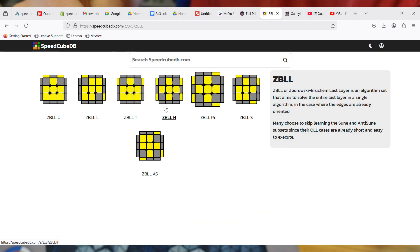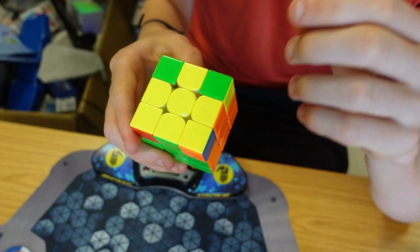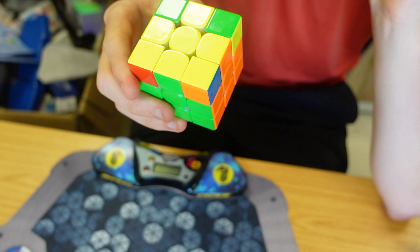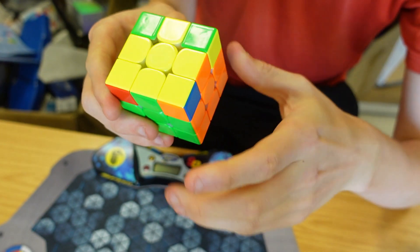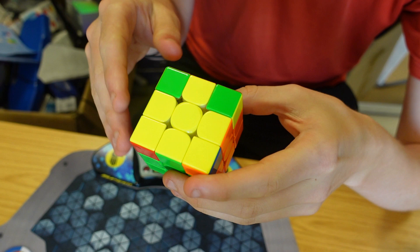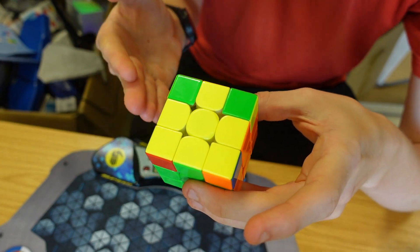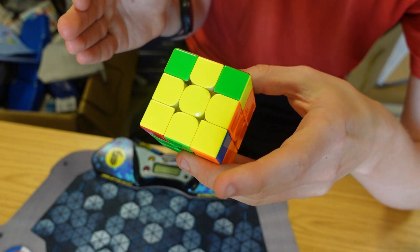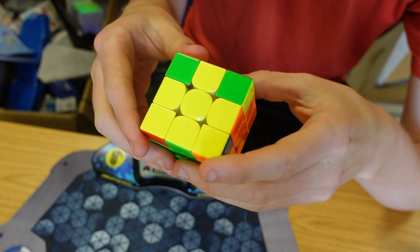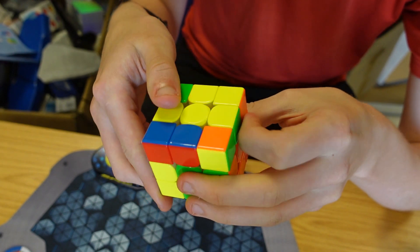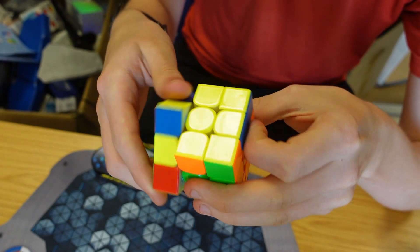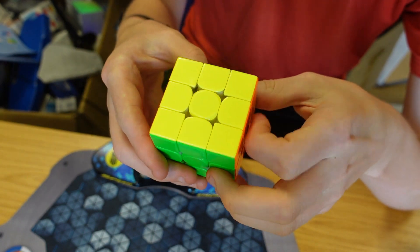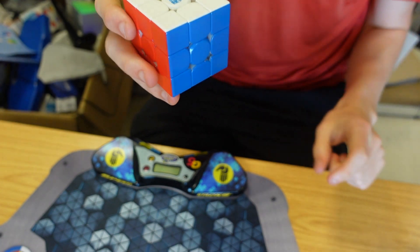There he finishes F2L and forces a cross on the top. I wouldn't be surprised if he knew what ZBL case he was going to get. Sometimes he would. Then he recognizes what ZBL he has out of 473 possible cases and he does the one correct algorithm. And the cube is solved in 4.66 seconds.